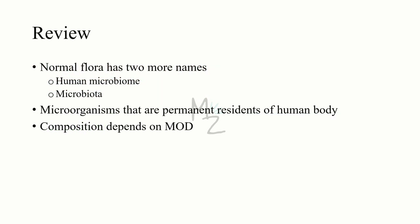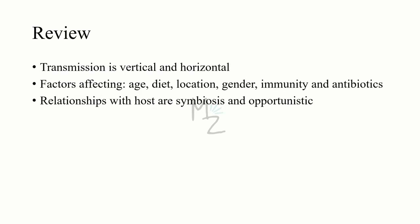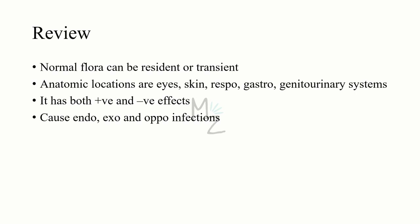Lecture review. Normal flora has two other names: human microbiome or microbiota. Microorganisms that are permanent residents of the human body are part of normal flora. Composition of normal flora depends on mode of delivery. There are two ways of transmission: vertical and horizontal. Factors that affect normal flora include age, diet, location, gender, immunity, and antibiotics. Relationships with hosts include symbiosis — covering mutualism, commensalism, parasitism — and opportunistic relationship. Normal flora can be resident (permanent) or transient (temporary). Anatomic locations include eyes, skin, respiratory system, gastrointestinal tract, and genitourinary tract. Normal flora has both positive and negative effects, and can cause endogenous, exogenous, and nosocomial infections.